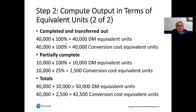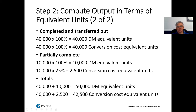That was step two. For completed and transferred out: 40,000 at 100% for both direct materials and conversion costs. For partially completed units: direct materials are 100% complete — added at the beginning of the process — giving 10,000 equivalent units. Conversion costs at 25% complete: 10,000 × 25% = 2,500. Total equivalent units: direct materials 50,000, conversion costs 42,500.